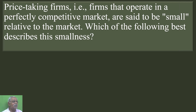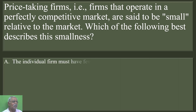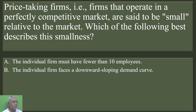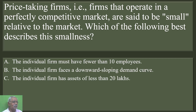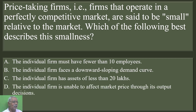Price-taking firms — that is, firms that operate in a perfectly competitive market — are said to be small relative to the market. Which of the following best describes this smallness? The individual firm must have fewer than 10 employees; the individual firm faces a downward sloping demand curve; the individual firm has assets of less than 20 lakhs; or the individual firm is unable to affect the market price through its output decision. Option D is the correct answer. Each firm contributes an insignificant part of total output, so any change in output by a single firm will not have any significant effect on price.